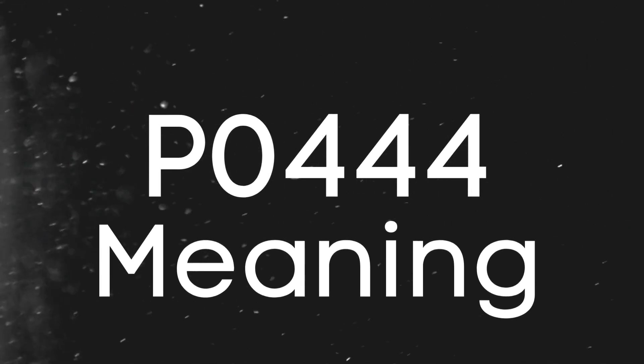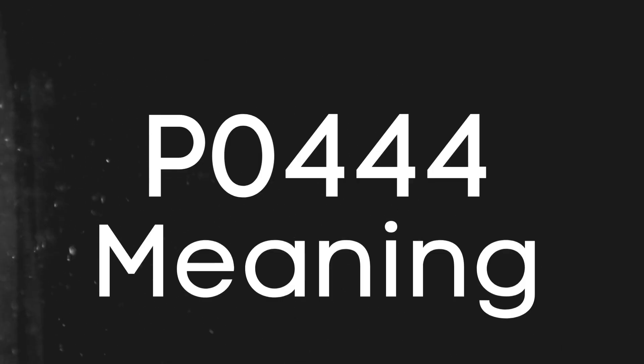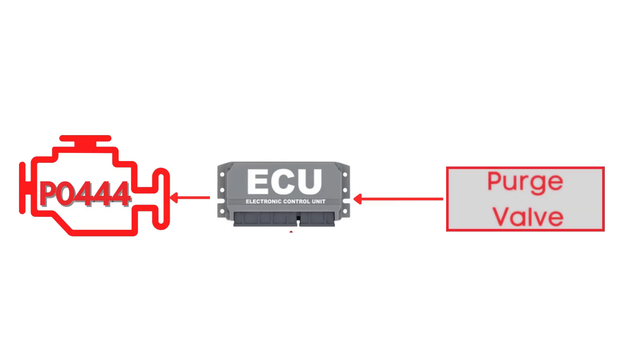First things first, let's break down what the P0444 code actually is. This code gets triggered when the PCM, or powertrain control module, detects a problem in the circuit that controls the purge valve in the EVAP system.